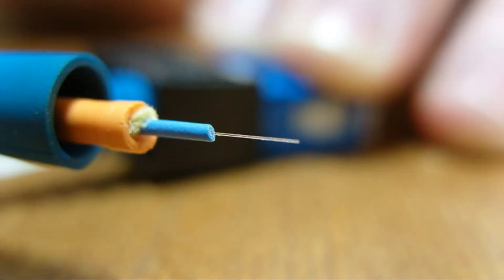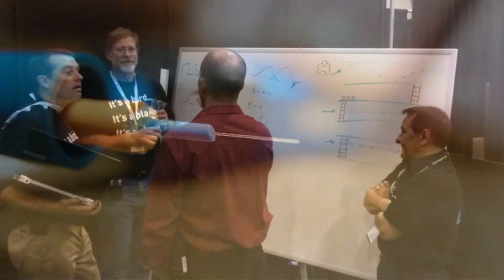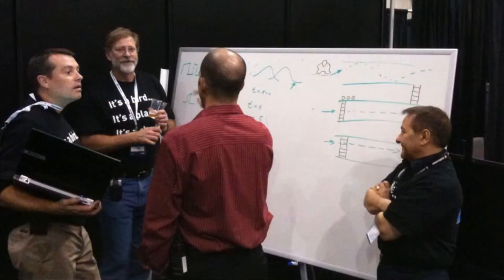So with single-mode fiber, obviously single-mode means one path. The light will go right down the center of the cord. There's nothing else except travel down the fiber and reach the other end, hopefully the way we sent it.